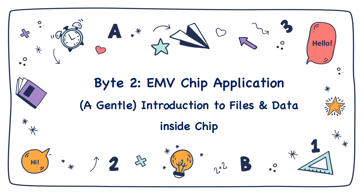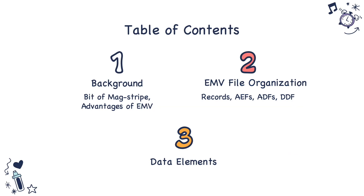Hello everyone. In the first video we saw what smart cards are, the types of smart cards, and the various protocols involved. In this video we will look at what data is stored inside a chip card and how it is stored. We will cover a bit of background about magnetic stripe cards so that we understand the real advantages of EMV. We will look at how data is organized within the chip card and some of the important data elements stored inside a chip card.